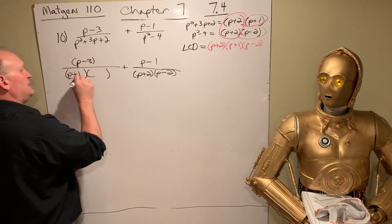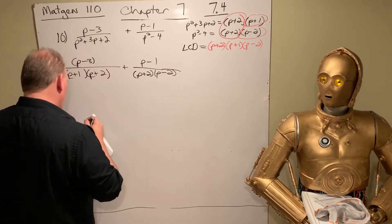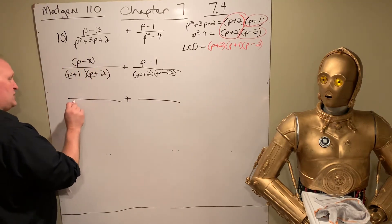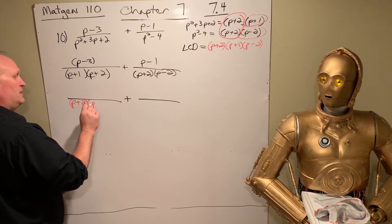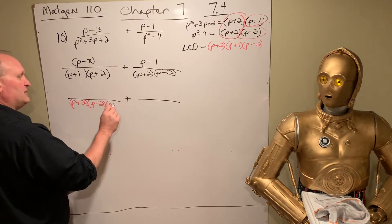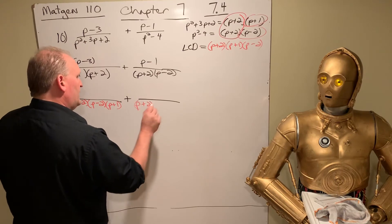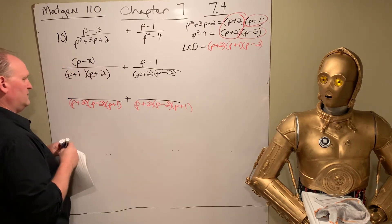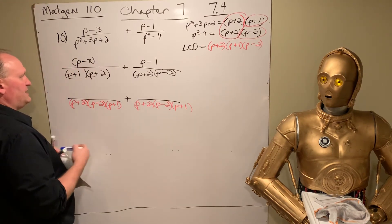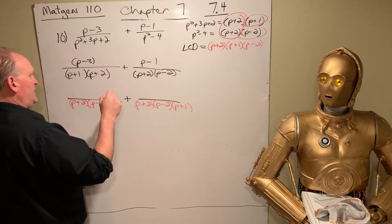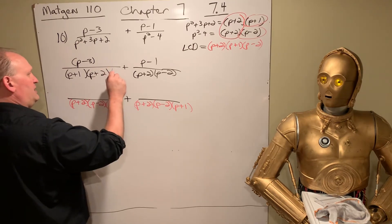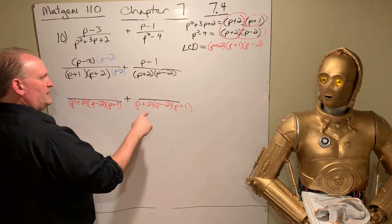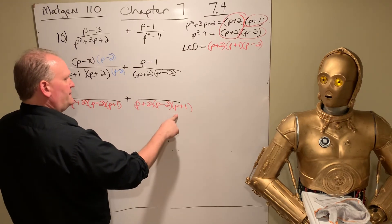It's so much easier to see if you have it in factored form. Now, let's go after what we want. We're on a vision quest to get P plus 2, P minus 2, P plus 1. And so we multiply top and bottom here to get P. We're missing a P minus 2. And here, we're missing a P plus 1.